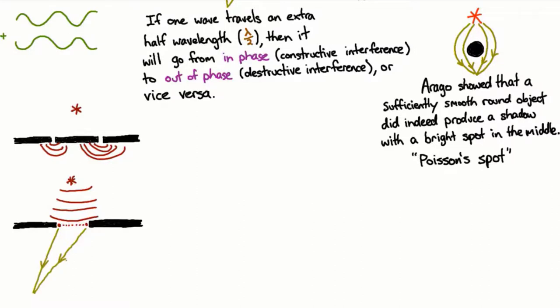And if they happen to be exactly half a wavelength out of phase, then you're going to get destructive interference and you'll have no light coming through there. When you have interference from just a single slit like that, that's called diffraction.